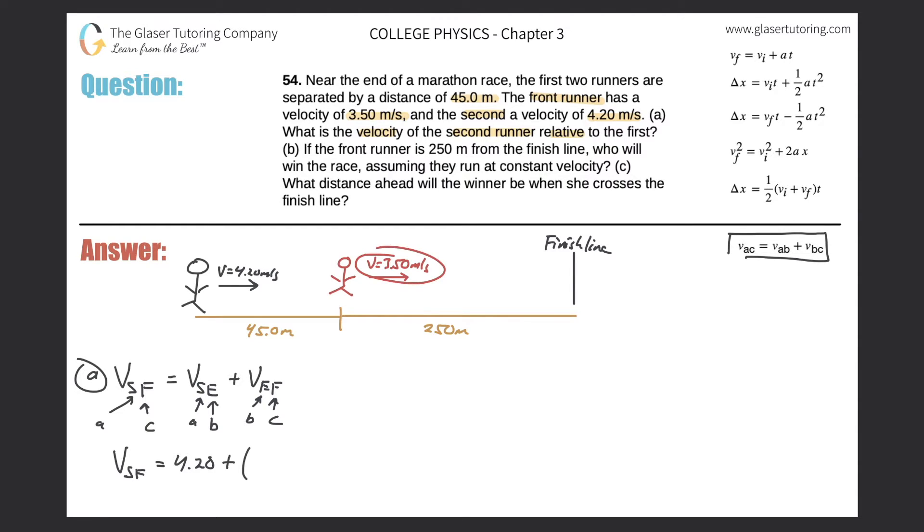We want to find the velocity of the second runner relative to the first, and that should equal velocity of the second runner relative to the earth. Well, that's the value that they gave us. That's the 4.20. Now, plus I have to find the velocity of the earth relative to the first runner. What is this number that they gave you, 3.5 meters per second? Well, that's the velocity of the first runner relative to the earth.